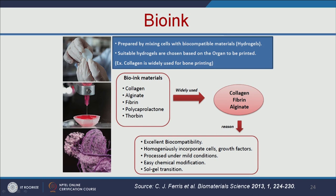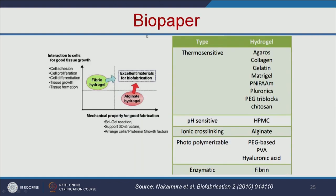Collagen, fibrin, and alginate are widely used bio-ink materials because they have very good biocompatibility, homogeneously incorporate cells and growth factors, are processed under mild conditions, allow easy chemical modification, and undergo sol-gel transition. For bio-paper, we can make thermosensitive bio-paper based on agarose, collagen, and gelatin; pH-sensitive bio-paper; ionic cross-linking using alginate; and photopolymerizable PEG-based or PVA-based bio-paper. Fibrin hydrogel and alginate hydrogel are very good materials for biofabrication — fibrin hydrogel has very good cell attachment, cell proliferation, cell differentiation, and tissue growth properties, while alginate hydrogel has good mechanical properties and supports the 3D structure, arranging cells, proteins, and growth factors.